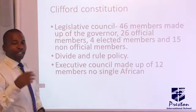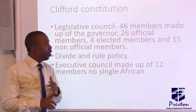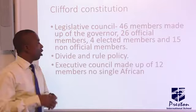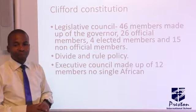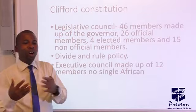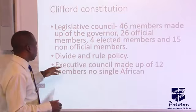The legislative council had 46 members, made up of the governor, 26 officials, 4 elected members, and 15 non-official members. It also continued what we refer to as the divide and rule policy, where the northern part of Nigeria was governed directly while the southern part was under the legislative body.